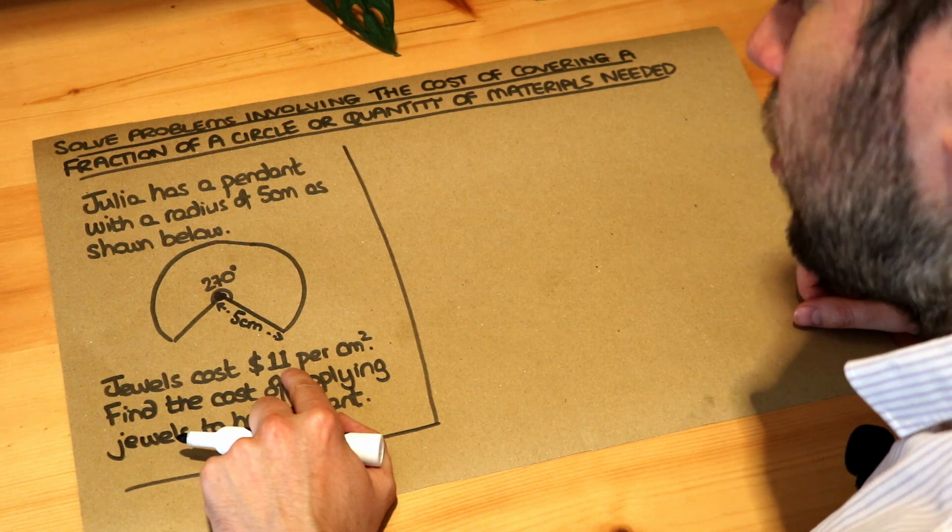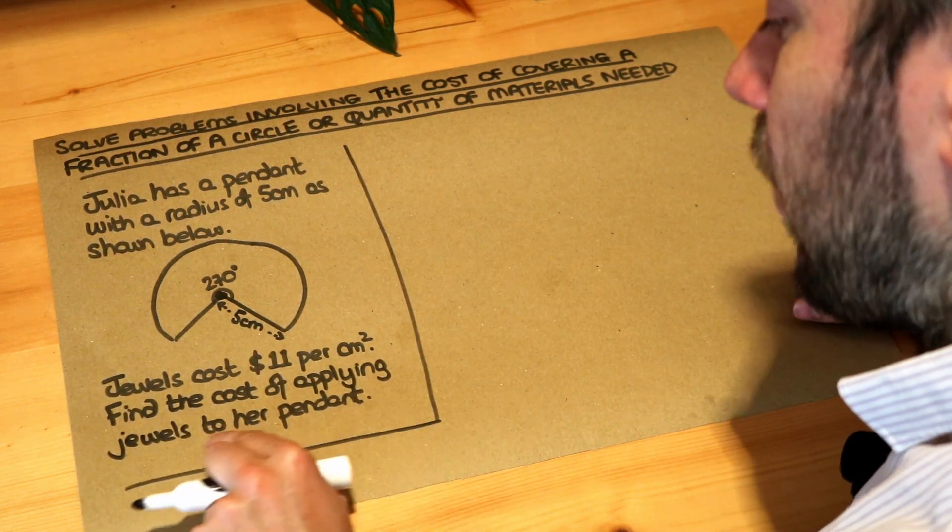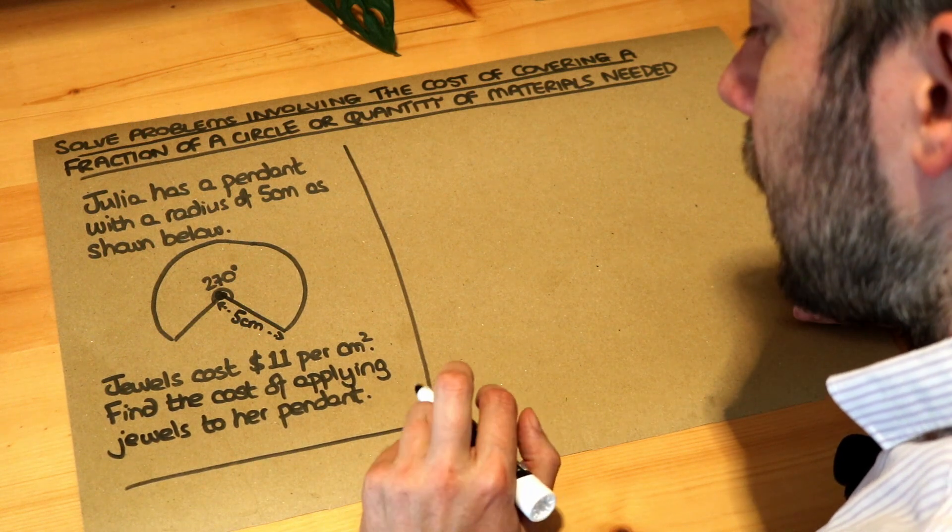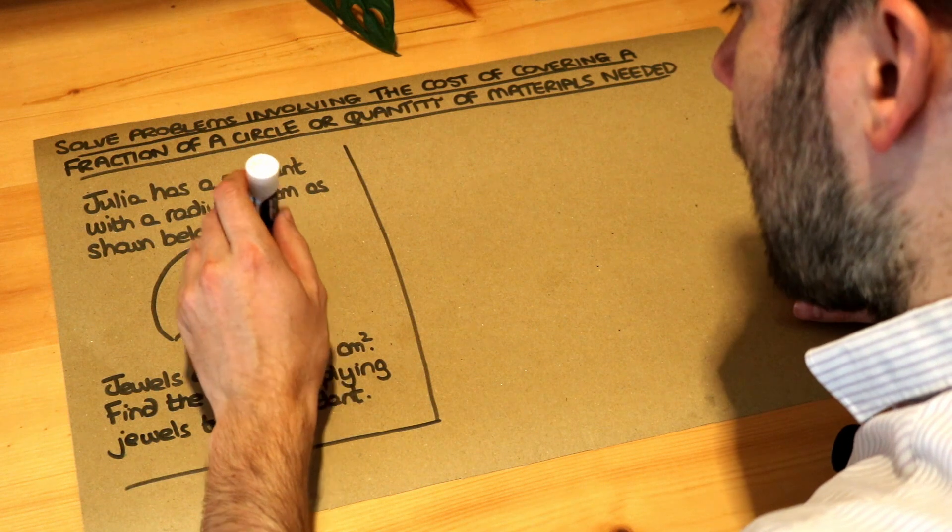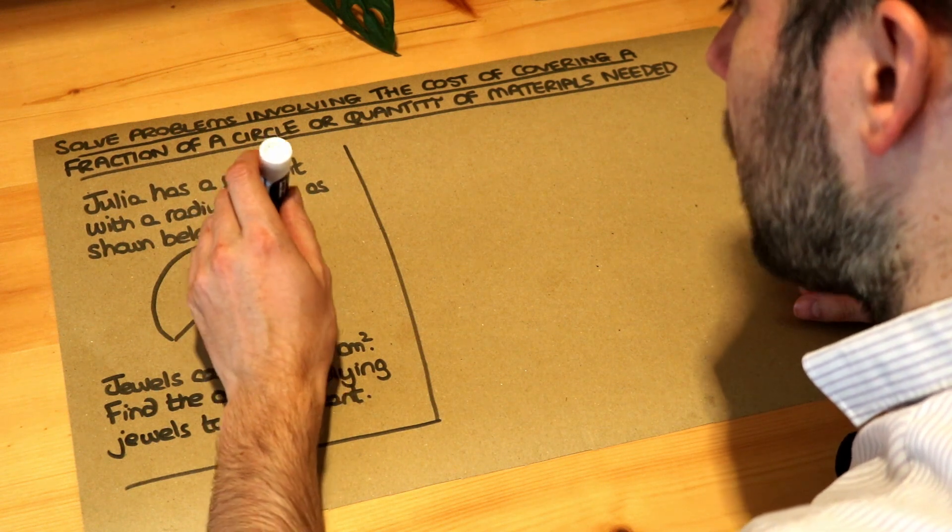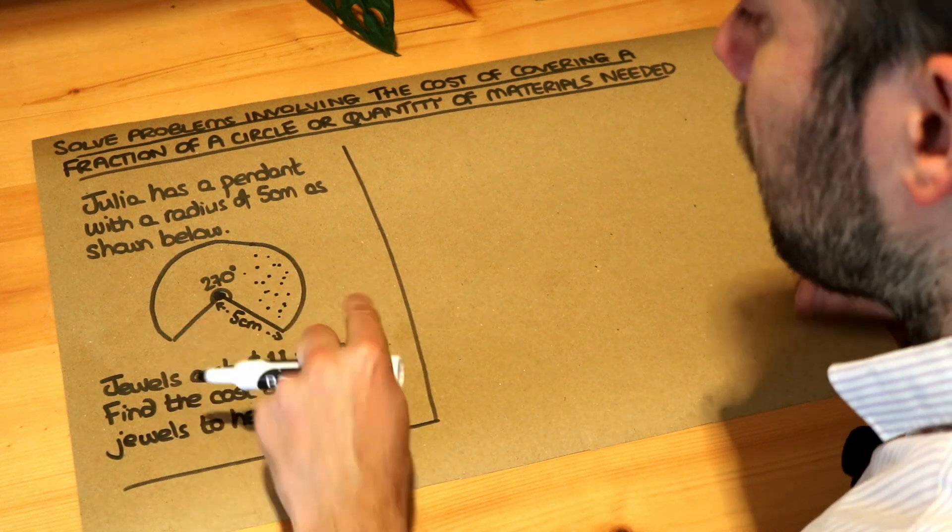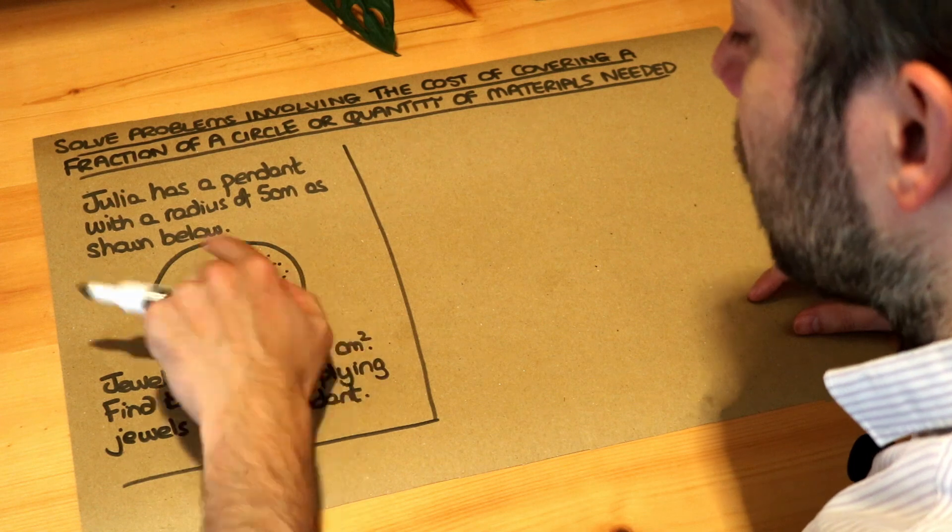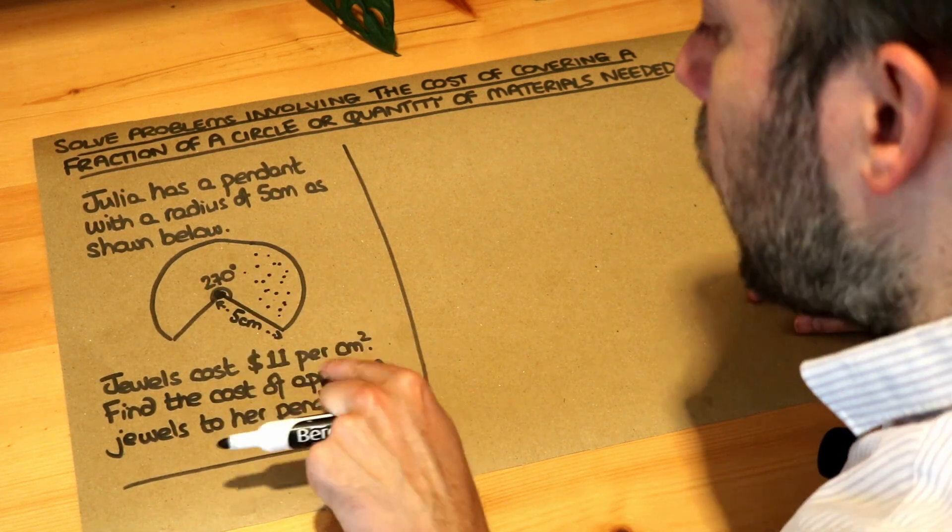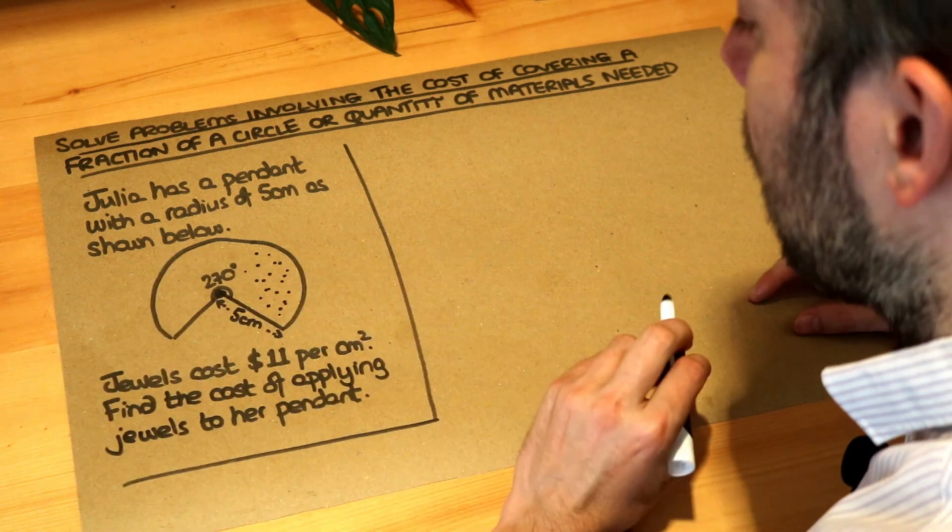Jewels cost $11 per centimeter squared. That's very cheap. Find the cost of applying jewels to the pendant. Now we're applying jewels to the pendant and for each centimeter squared we cover it's going to cost us $11. So basically we need to find the total area of this pendant, and if we have that area in centimeters squared we can just multiply it by the $11 for each of those centimeters squared to find the total cost.